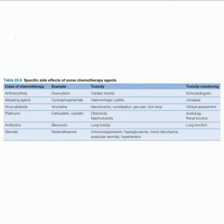Next, alkylating agents — for example cyclophosphamide — toxicity is hemorrhagic cystitis, monitored by urinalysis. Then vinca alkaloids, for example vincristine — toxicity is neurotoxicity, constipation, jaw pain, and foot drop, monitored by clinical assessment.